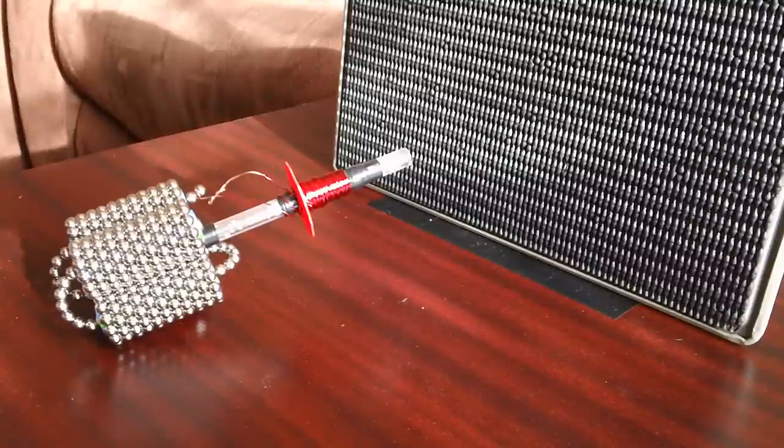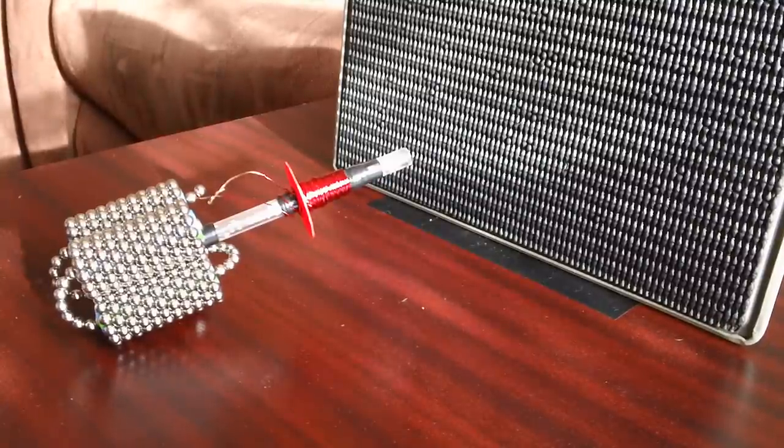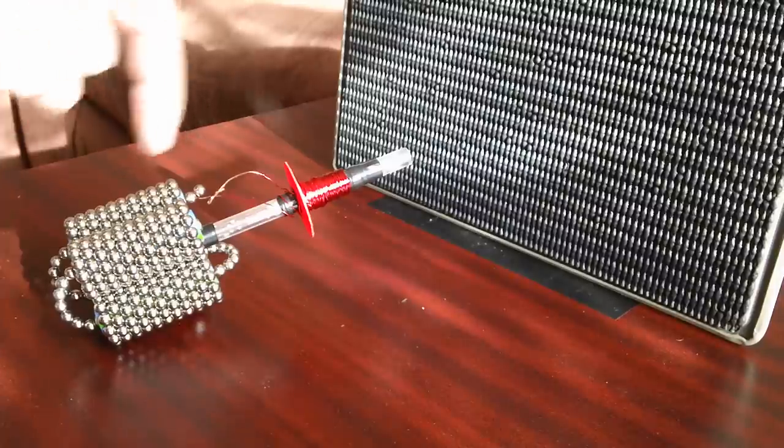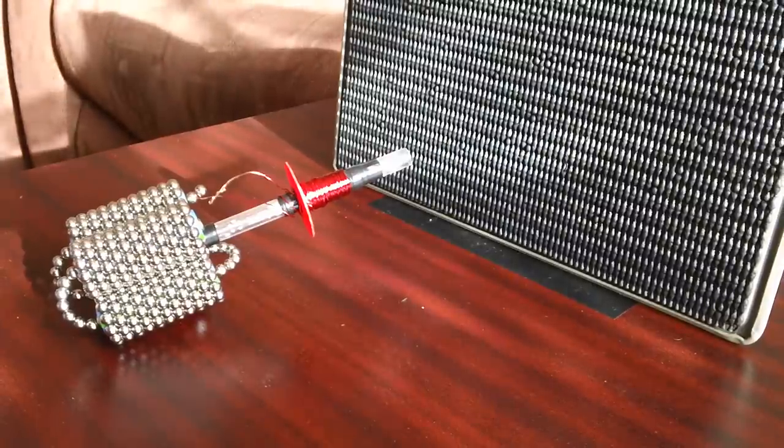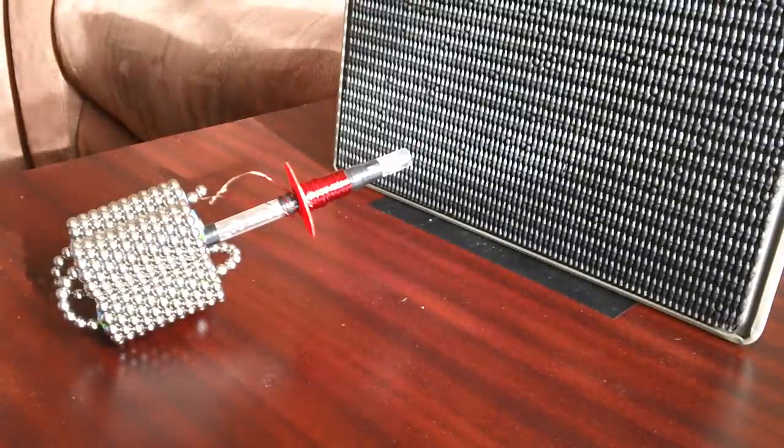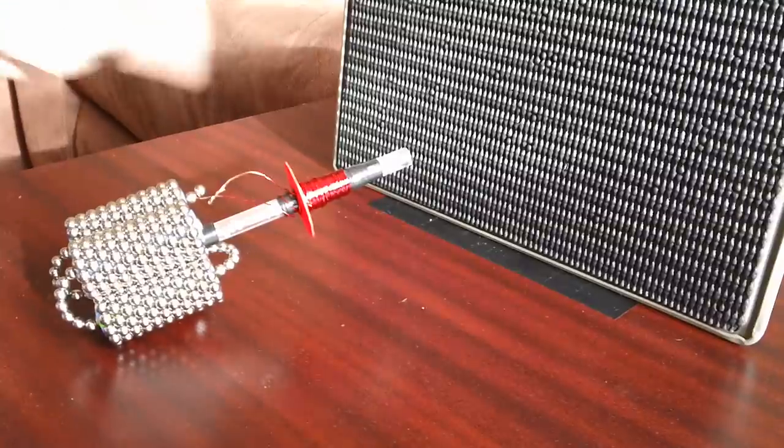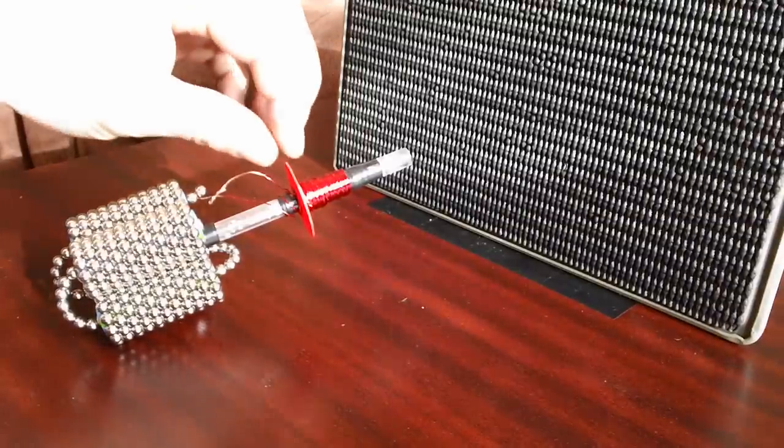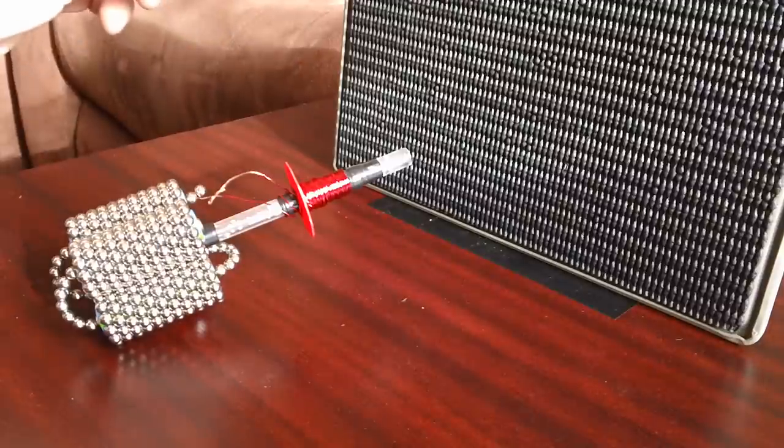I'm going to call it my Buckyball's Cannon. It's powered by four AA batteries that are rechargeable. It's a pen tube that makes up the chamber. Enameled copper wire coil with a bit of plastic there to help it gather up.